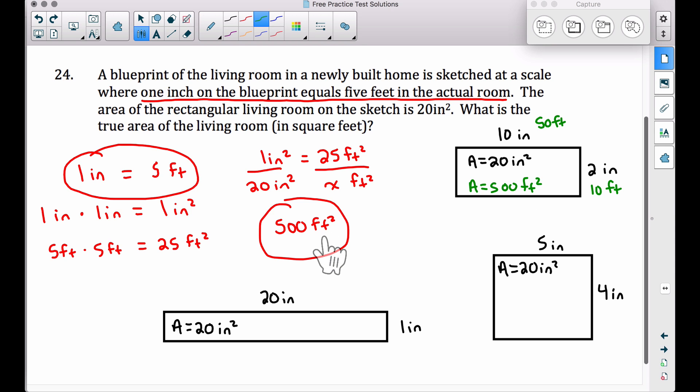Hmm. Same thing as that, right? Let's convert these to feet based off of our blueprint conversion here. 5 inches is going to be 25 feet in real life. 5 times 5. 4 inches is going to be 20 feet in real life. 4 times 5 gives you 20. The area of this rectangle, 25 times 20. Check it out. 500 square feet. And then last but not least.